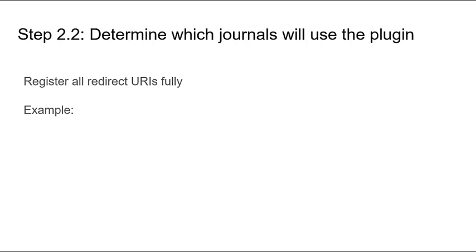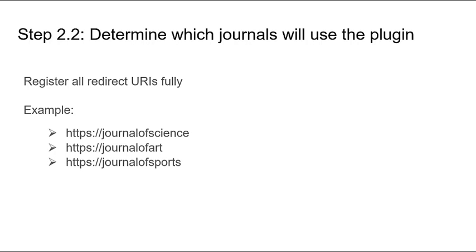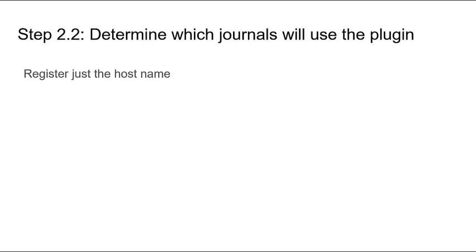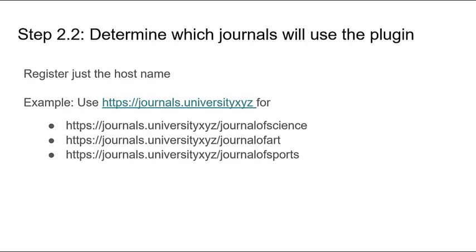If you choose to register all of the journals' URIs fully, you'll list the URI for every journal that will be using your institution's member API and setting up the ORCID plugin. So, if you're a library publisher hosting the Journal of Science, the Journal of Art, and the Journal of Sports, you'll list each of these URIs in the application form. The second option is to register a host name that is the root URI for all other journals that will use the plugin under your membership. For example, if all of your institution's journals have a URI beginning with journals.universityxyz, registering that base URI will allow the plugin to work for all other examples listed here — journals.universityxyz/journal-of-science, journal-of-art, and journal-of-sports.